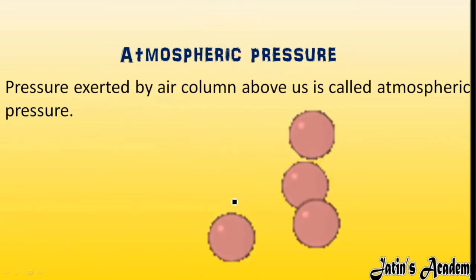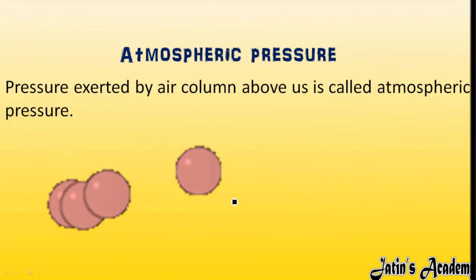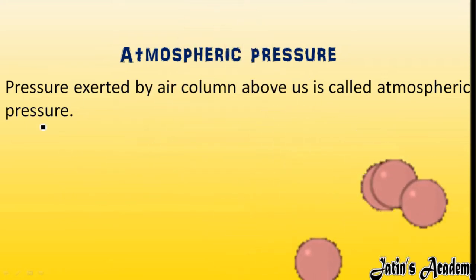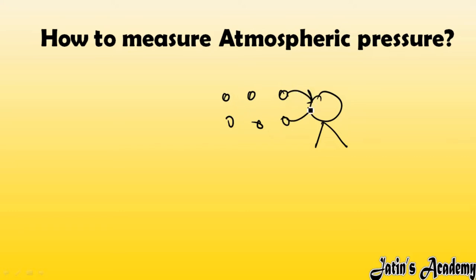Next, we have atmospheric pressure. We are living in a blanket of air known as the atmosphere. Air particles exert pressure above us, and this pressure exerted by the air column above us is known as atmospheric pressure. When we are standing at standard atmospheric pressure, the particles present in the air exert pressure on our body — exactly equal to the pressure exerted by one elephant sitting on your head.